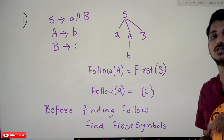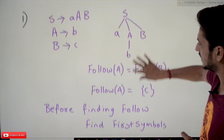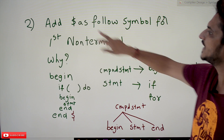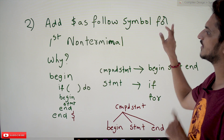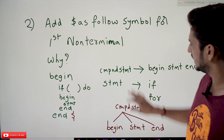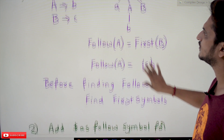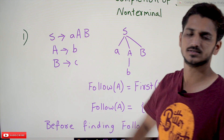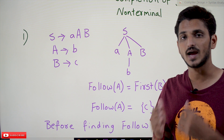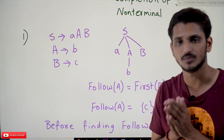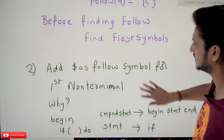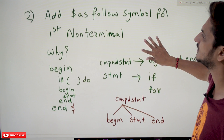The second condition: add dollar as the FOLLOW symbol for the first non-terminal (the start symbol). In our example, the first non-terminal is S, so FOLLOW(S) = {$}. Why do we add dollar as a FOLLOW symbol? Let's understand with an example.